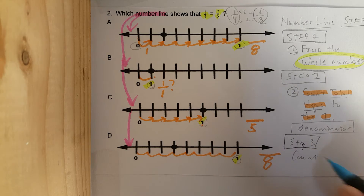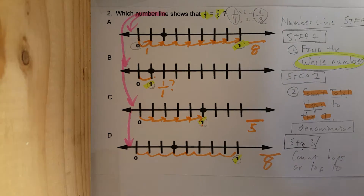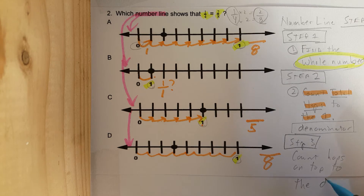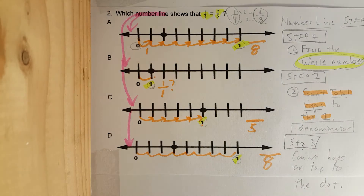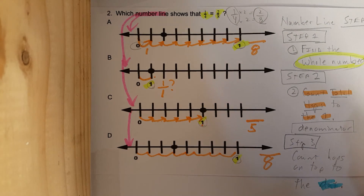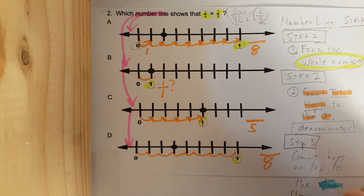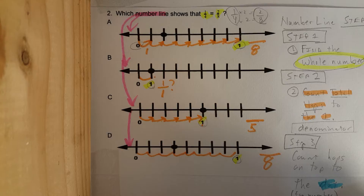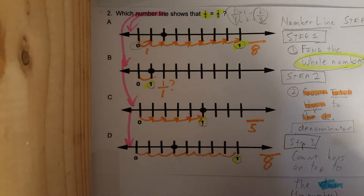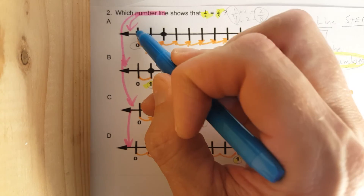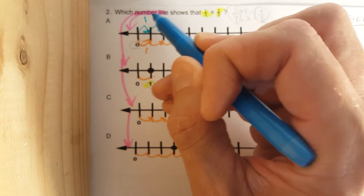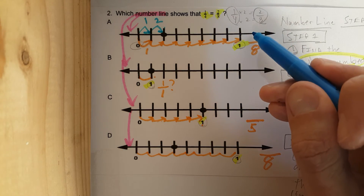Step three: count hops on top to the dot. We'll do this in blue. This will be your numerator — the top number, also known as the numerator. On number line A, counting to the dot: one, two — two hops, so that gives us two over eight.